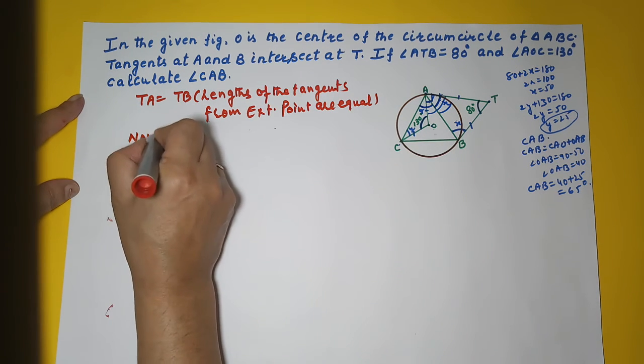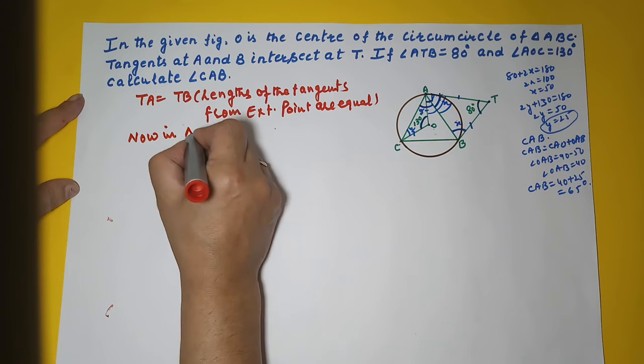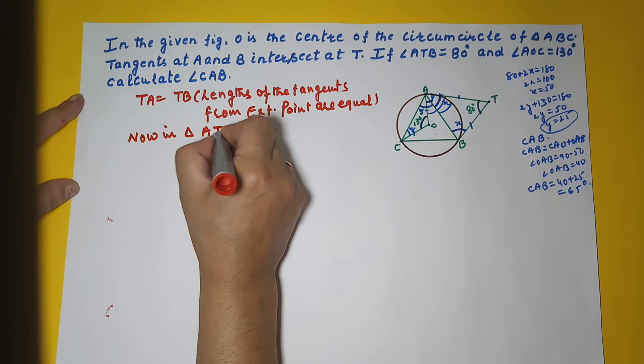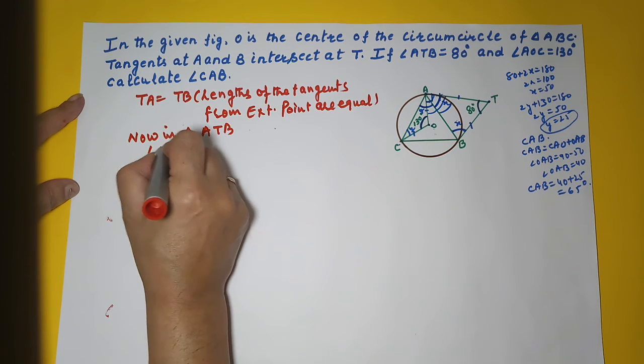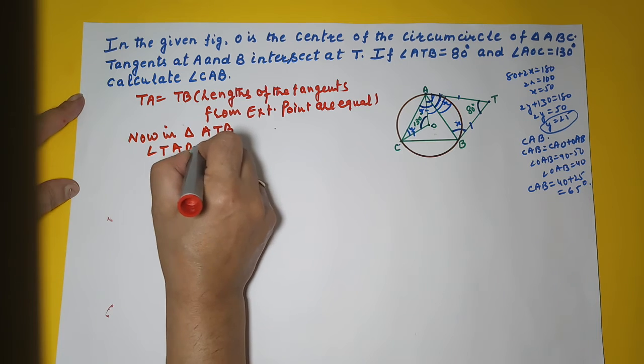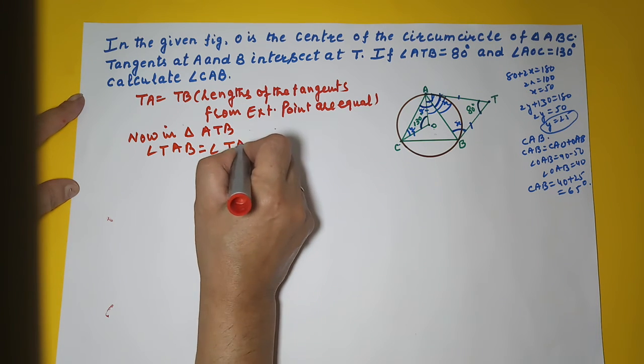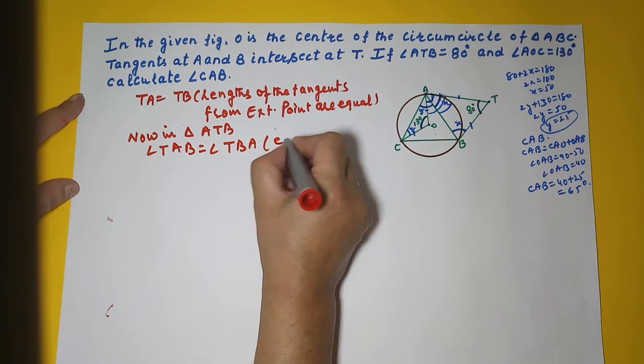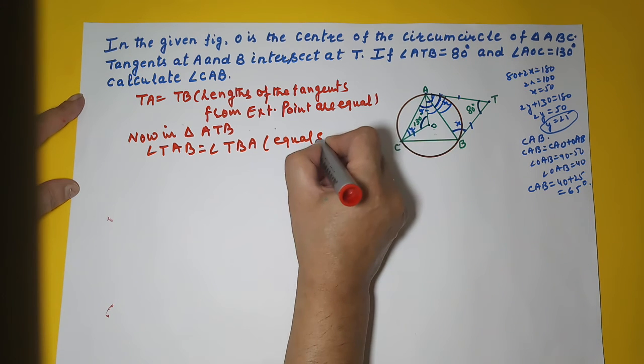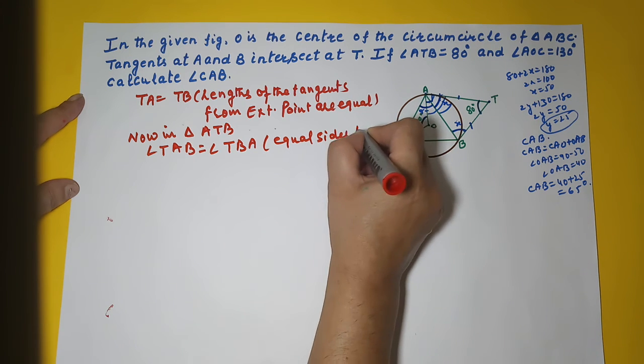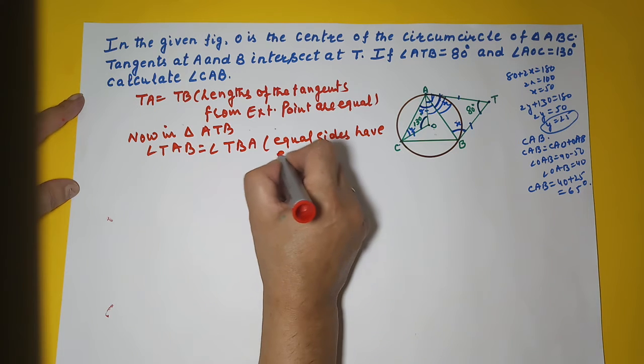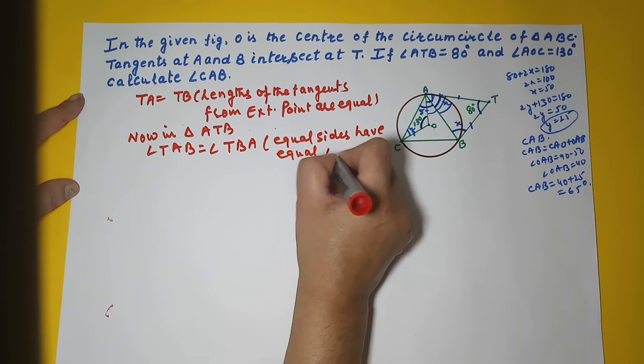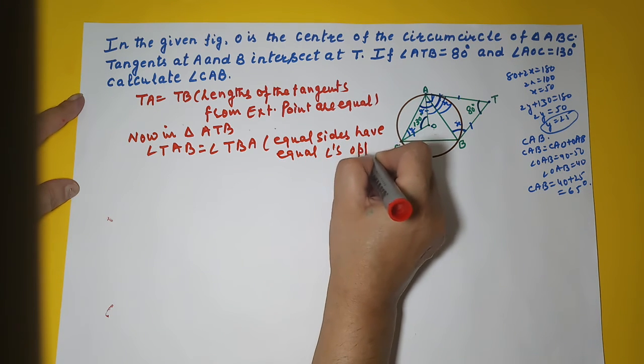Now in triangle ATB, angle TAB will be equal to angle TBA, and equal sides have equal angles opposite to them.